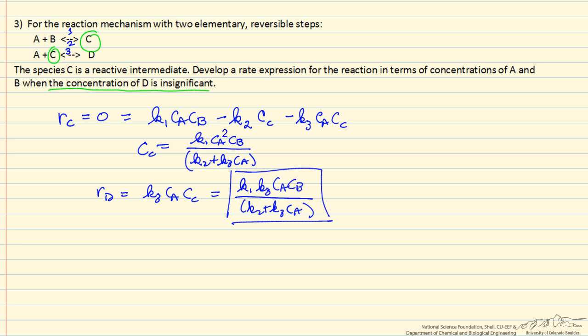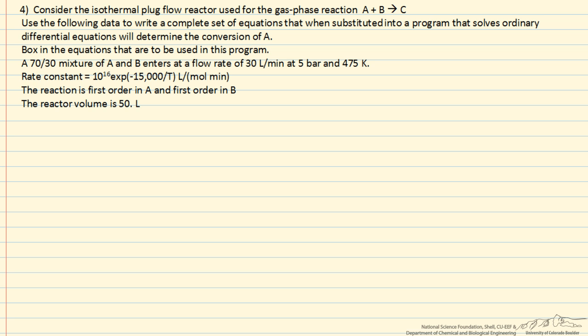We don't have the reverse reaction of D going back to A plus C, just because the concentration of D is low. In this example, we have an isothermal plug flow reactor, and we're using for the gas phase reaction A plus B goes to C, so we have a mole change. And we're not going to solve to get a numerical answer. We want to write down the equations that if we substitute into a program that solves differential equations, we can determine how much of A has reacted to conversion.